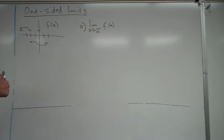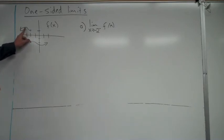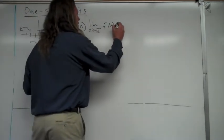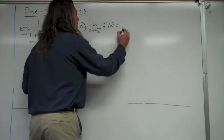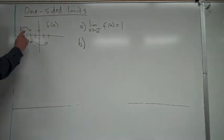You're ignoring completely the right-hand side. On the graph, x equals negative 2 is right here. I'll put my finger on the function to the left of negative 2 and bring it in to see, as I approach negative 2, what is the y-value approaching? As I get there, it looks like it's approaching 1. So this left-hand limit is equal to 1.